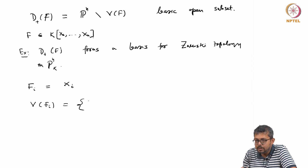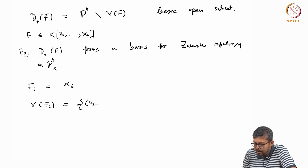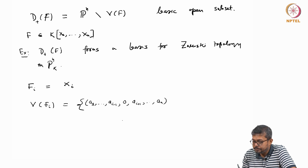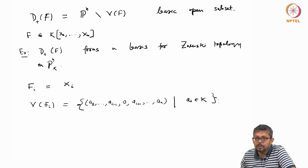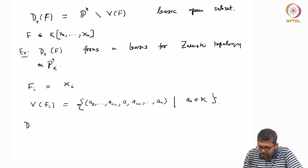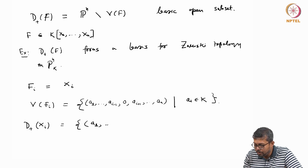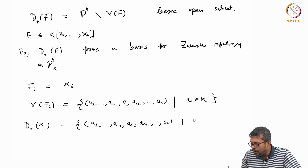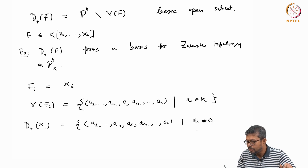V(f_i) means the zero set of x_i equal to 0. So that means this is of the form [a_1, a_2, ..., a_{i-1}, 0, a_{i+1}, ..., a_n] where a_j belongs to k. And what is the complement D+(x_i) or D+(f_i)? This is nothing but [a_1, a_2, ..., a_{i-1}, a_i, a_{i+1}, ..., a_n] where a_i is not 0, and other entries can be anything.